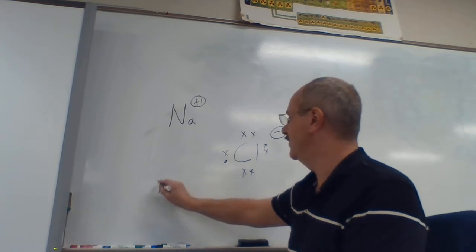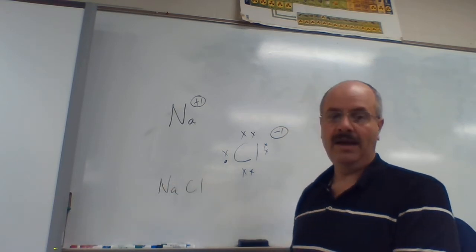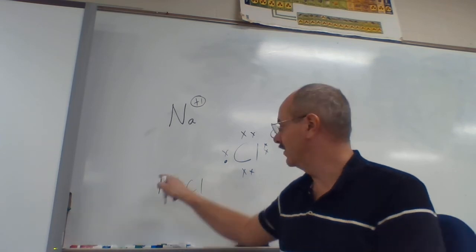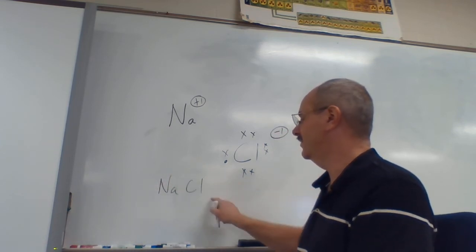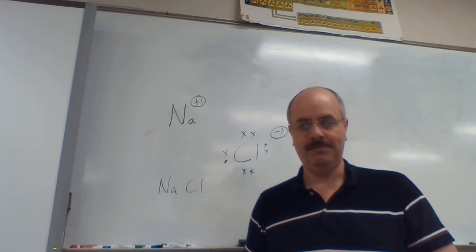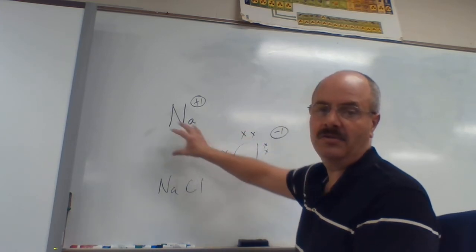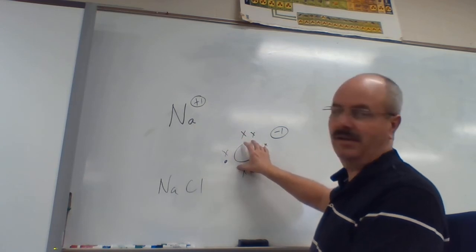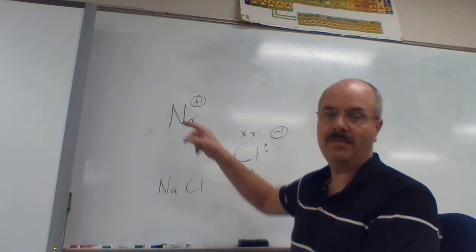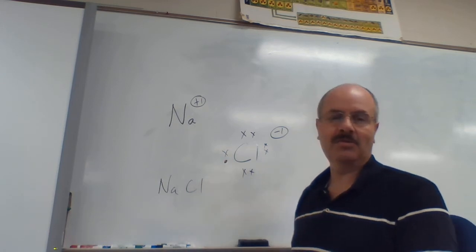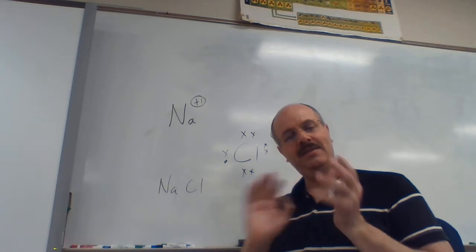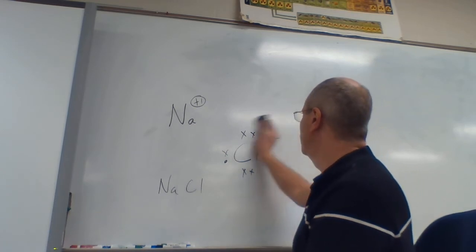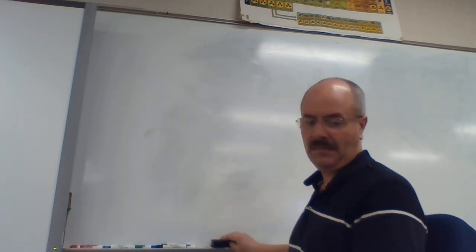These two are attracted to each other — a positive one and negative one — boom, they get pulled together and it makes sodium chloride, the formula NaCl. Because it's plus one and minus one, we end up with a one-to-one ratio. Remember the crisscross method — positive one, negative one, crisscross — gives us NaCl. When you diagram this, I want you to show sodium with no valence electrons and chlorine with his seven plus the one gained from sodium, using X's and dots to indicate which electron came from which atom.